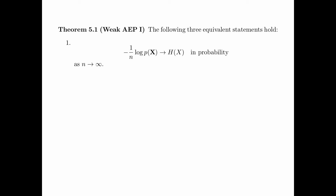Theorem 5.1 is the first version of the weak asymptotic equipartition property, which says that the following three equivalent statements hold. First, minus 1 over n times log of the probability of the random vector x tends to the entropy of x in probability as n tends to infinity. This means that for any epsilon greater than 0, the limit as n goes to infinity of the probability that the absolute value of minus 1 over n log p(bold x) minus entropy of x is greater than epsilon equals 0.